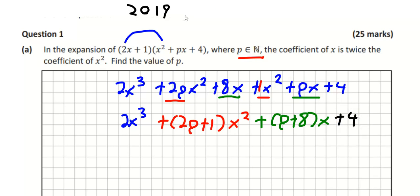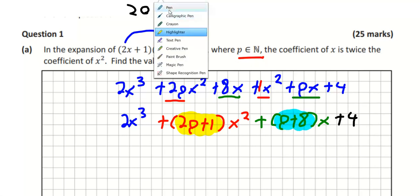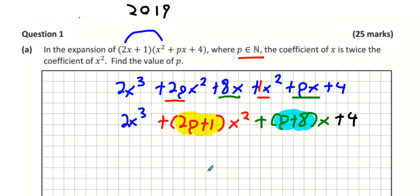And what we're claiming is that the blue is twice the yellow, that the coefficient of x is twice that of x squared. So we have p plus 8 equals 2 times 2p plus 1, which is 4p plus 2, the same as p plus 8.